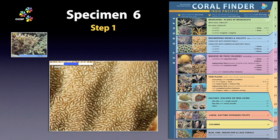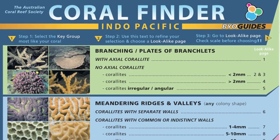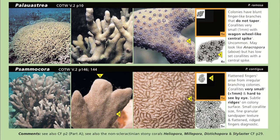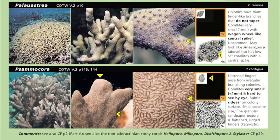Specimen 6. This one is both quick, easy and memorable, because it's almost impossible to see these coralites underwater. So we have branching key group, no axial coralites, coralites less than 2mm, and thus lookalike pages 2 and 3. Only Samacora on page 3 has coralites that small. Underwater, they look like fine sandpaper, and when greatly magnified, you can see their fine, granular texture.